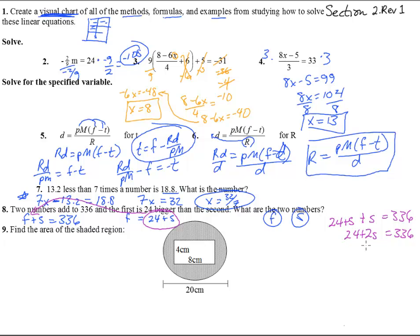And then subtract 24, and we get 2s equals 312. s equals 156 when we divide by 2. So that's the second number. And so we stick this guy, we put him right back over in there to find out what f is. f equals 24 plus 156. And so we end up with 180. And there are two things.